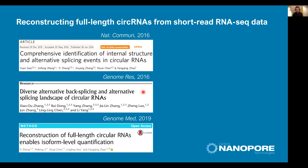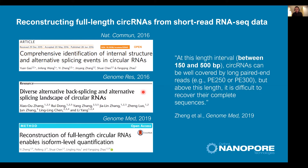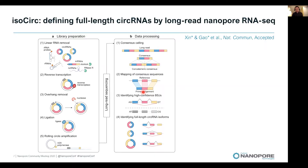Because of this limitation, in the last few years various computational methods have been developed to reconstruct full-length circular RNA sequences using short-read data. In a paper published last year, the authors conducted a comprehensive evaluation of state-of-the-art methods for reconstructing full-length circular RNAs. The take-home message is that even using long paired-end Illumina sequencing, circular RNAs below 500 base pairs could be reconstructed, but above 500 base pairs it is difficult to recover their complete sequences. This was the motivation for us to develop ISOCIRC, a new nanopore-based method for sequencing full-length circular RNA isoforms.